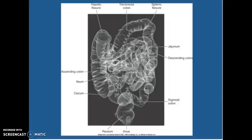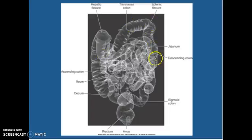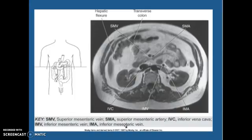This is a CT — we do them in place of a colonoscopy, so virtual colonoscopy is what you've probably heard. This is the jejunum, then to the ileum, to the cecum, and then ascending, hepatic flexure, transverse, splenic flexure, coming down — descending into your sigmoid, to your rectum, to your anus. You'll have to be able to label that.